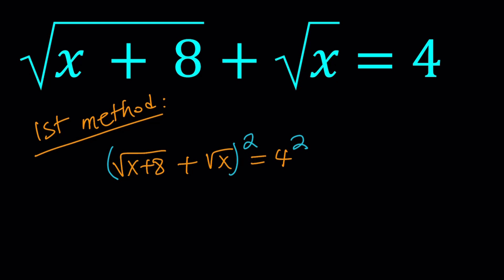When you square a plus b, you get a squared, which is square root of x plus 8 squared. And remember, that is just x plus 8, plus b squared. By the way, I'm calling this a and this one b. That's going to give us x plus 2ab. Remember the formula? a squared plus b squared plus 2ab. And the 2ab is just going to be 2 times the square root of x plus 8 times the square root of x. And on the right-hand side, we have 16.